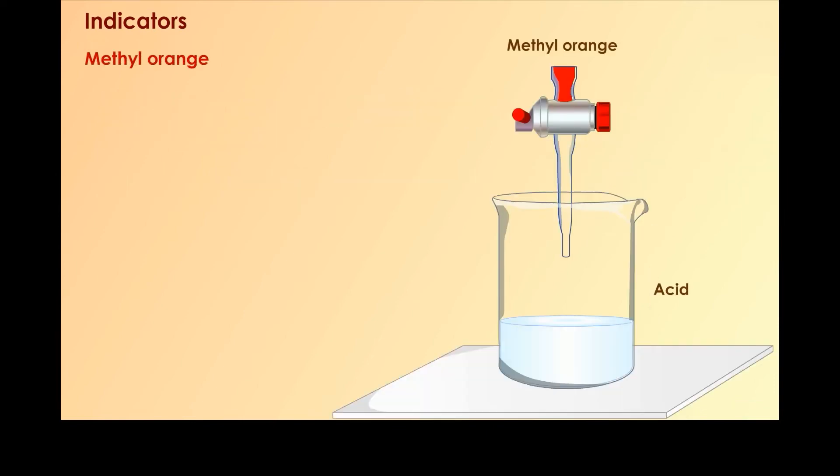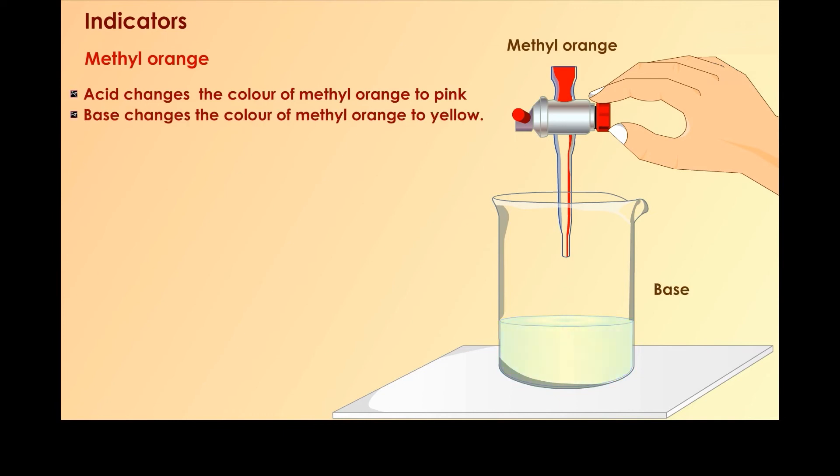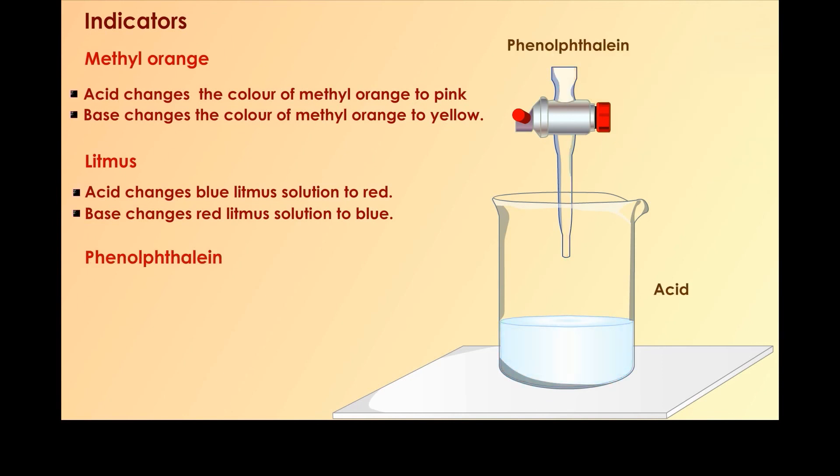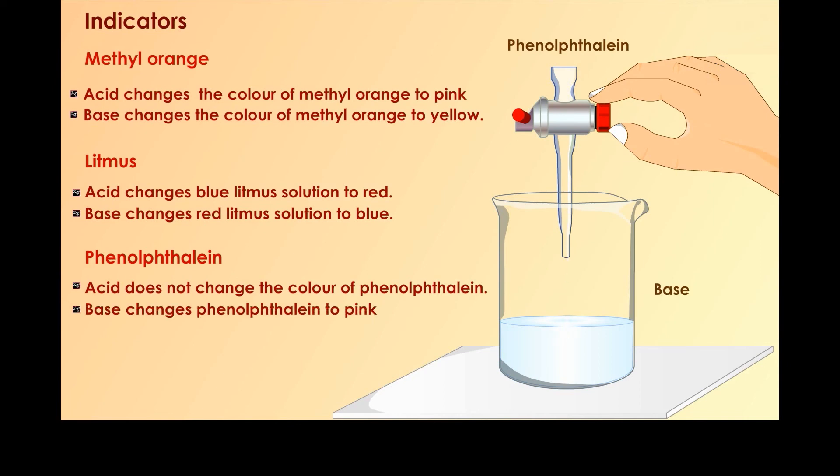Methyl orange: acid changes the color of methyl orange to pink. Base changes the color of methyl orange to yellow. Litmus: acid changes blue litmus solution to red. Base changes red litmus solution to blue. Phenolphthalein: acid does not change the color of phenolphthalein. Base changes phenolphthalein to pink.